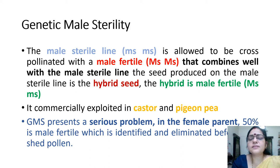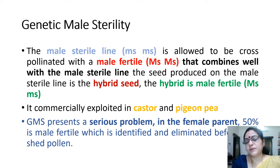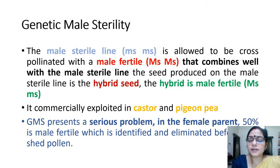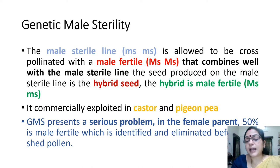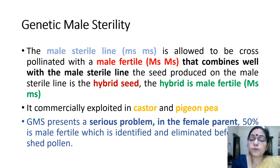Genetic male sterility presents a serious problem: in female parent species, 50 percent is male fertile, which must be identified and eliminated before the pollen is shed.